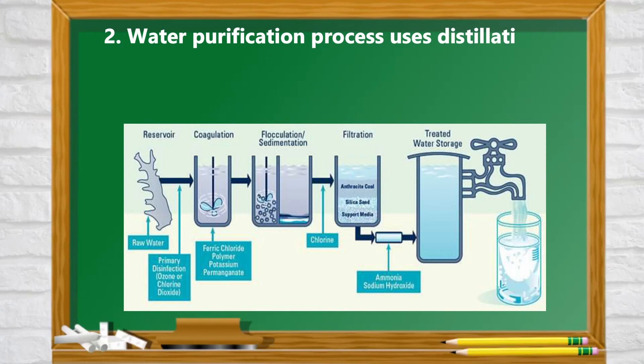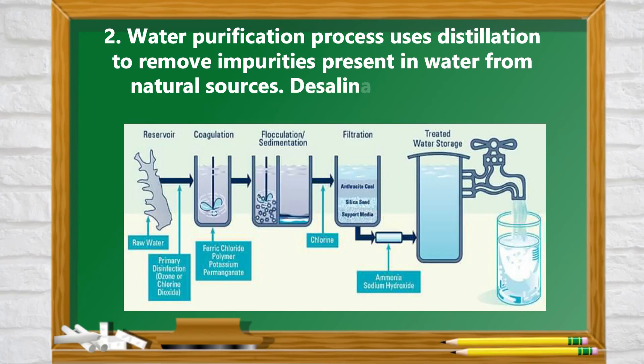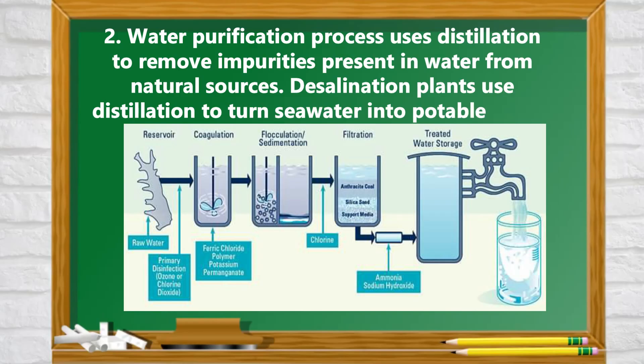2. Water purification uses distillation to remove impurities present in water from natural sources. 3. Desalination plants use distillation to turn sea water into potable water.